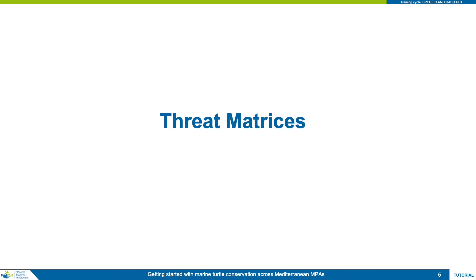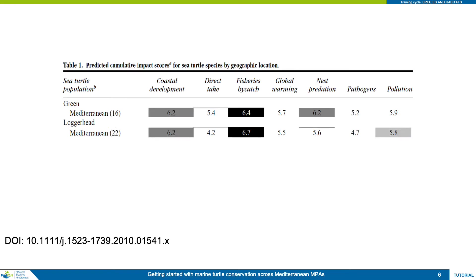Each life stage presents the turtle with its own set of issues. Let's look at tables presenting threat matrices from the two published papers and see what they highlight. The first study looked at a number of threats for marine turtle species around the globe and I extracted the values for the Mediterranean populations.